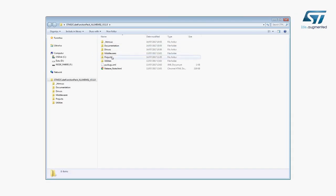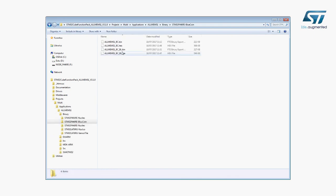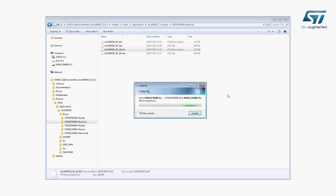Now let's try this simple application that allows us to connect the BlueCoin to an Android or iOS smartphone app. Just choose the correct binary file and drag and drop it to the Nucleo board icon.